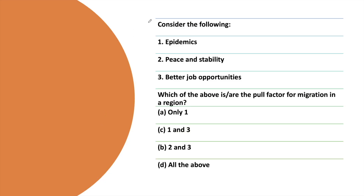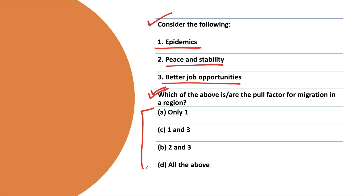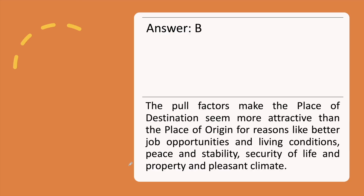The next question: Consider the following — epidemics, peace and stability, better job opportunities. Which of the above are the pull factors for migration in a region? The correct answer is option B, with the explanation. Make sure you are reading the options carefully along with the question — only then will you be able to answer properly.